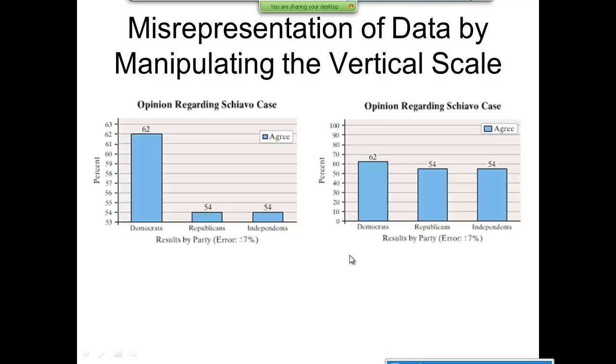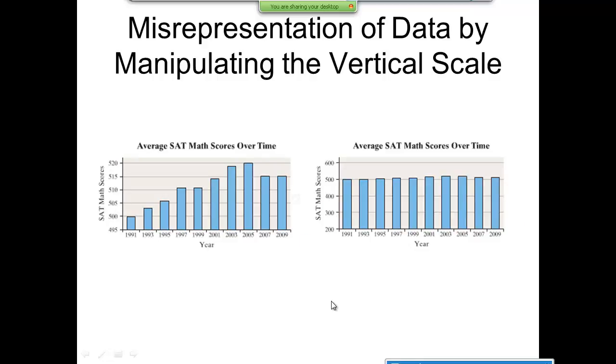Here's another example of manipulating the vertical scale. This shows average SAT math scores over time. You can see back in 1991 it's 500, and in 2009 it's 515. If you look at the height of the bar graph, it looks like it's increased fourfold, but actually it hasn't. If you put the vertical scale where the lowest score, 200, is on there, you see on the right they're pretty much roughly the same going across.